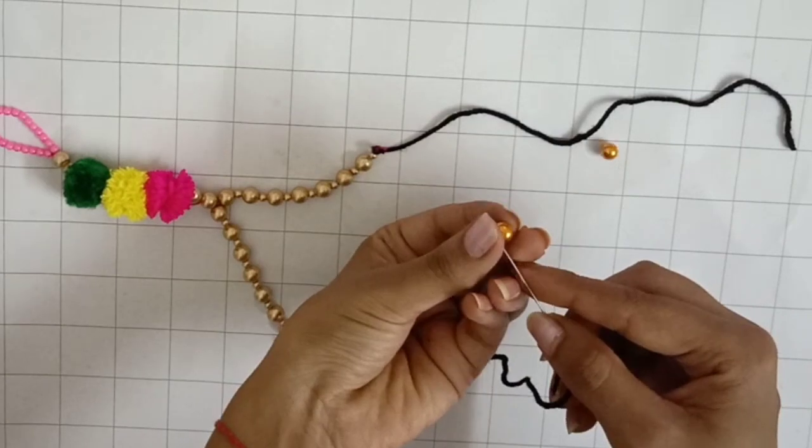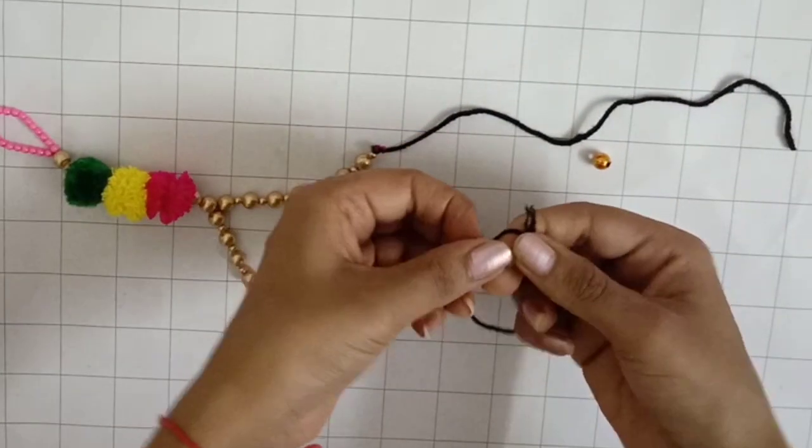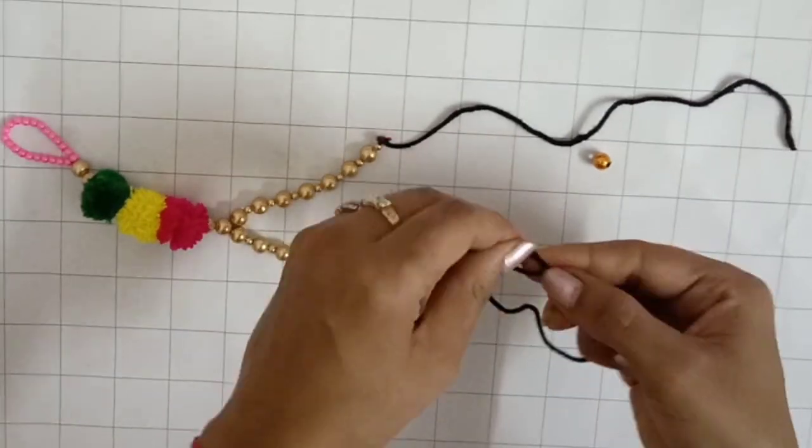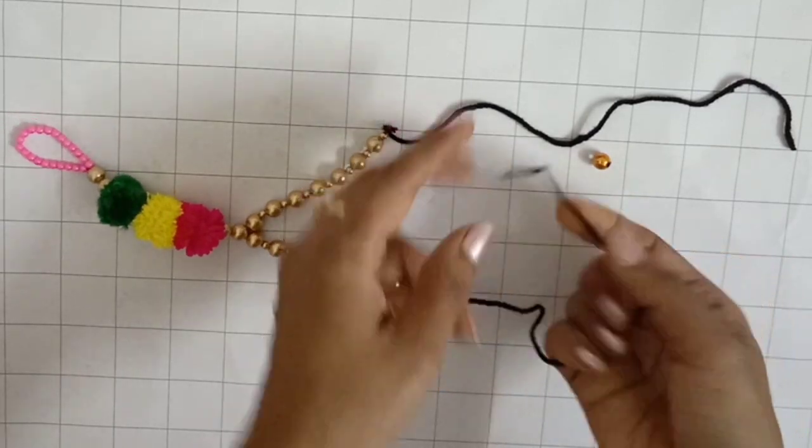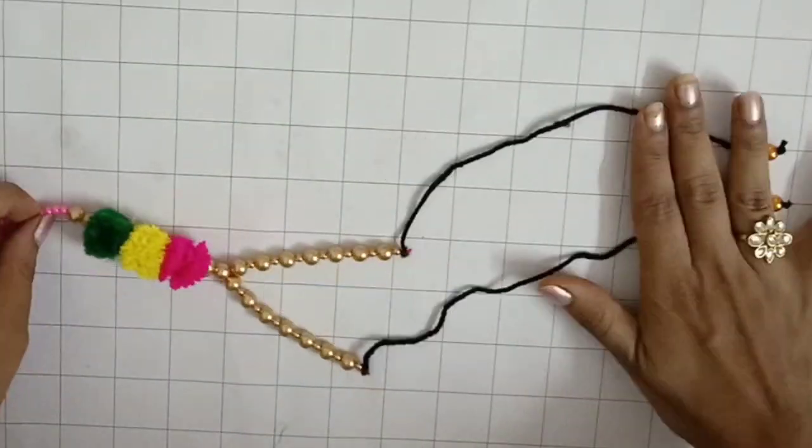And again I have put it on the top of the golden color beads. And here I will secure it on the top so that this cloth doesn't fall out, and here I have cut the extras.